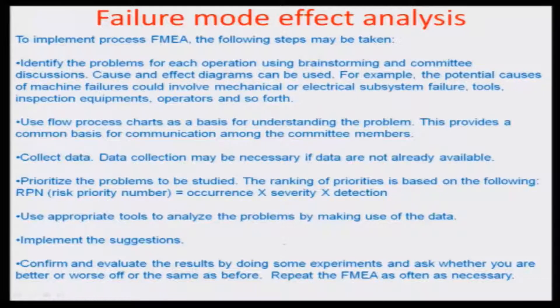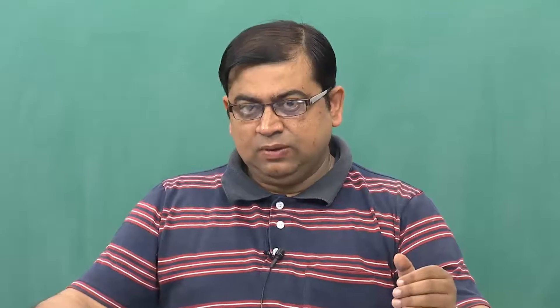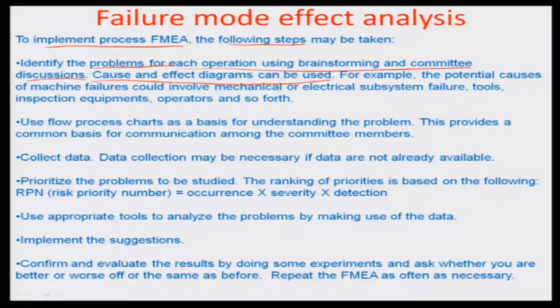Before that, let us study how the ranking is done. The implementation of the FMEA process necessitates the following steps. First, you identify the problems for each operation, mostly at the local level. For example, when talking about an automotive shop and problems related to paint or assembly, the group associated with fitment - including the people who are online doing the fitment - would be the best people to decide on that particular failure mode. There are many ways of representing that thought process from committee discussion or brainstorming, one of which is cause and effect diagrams.